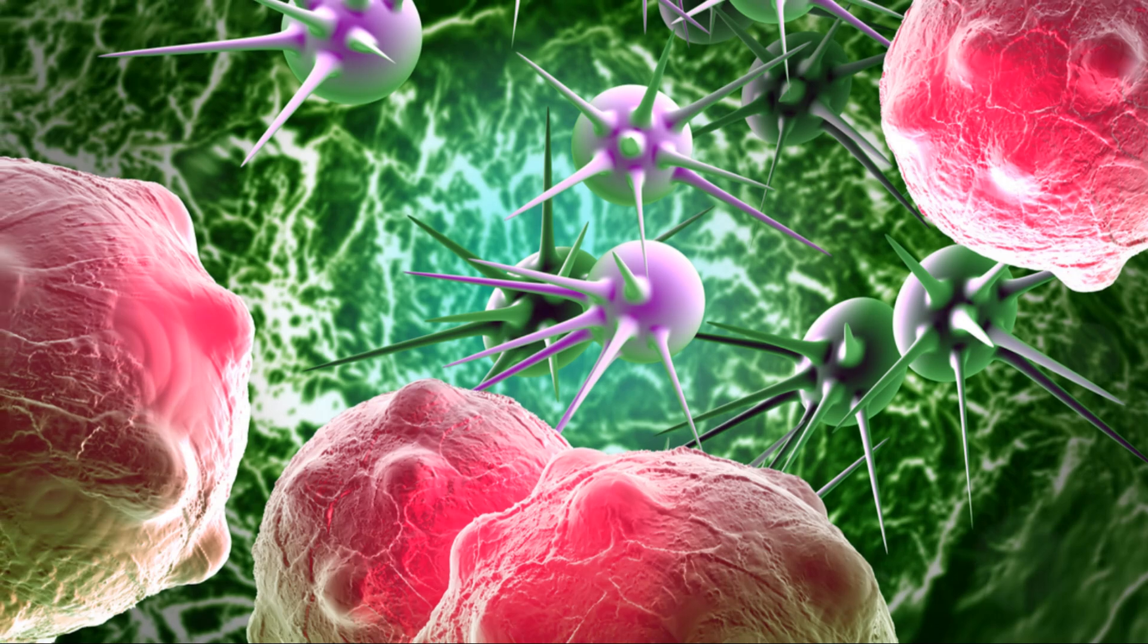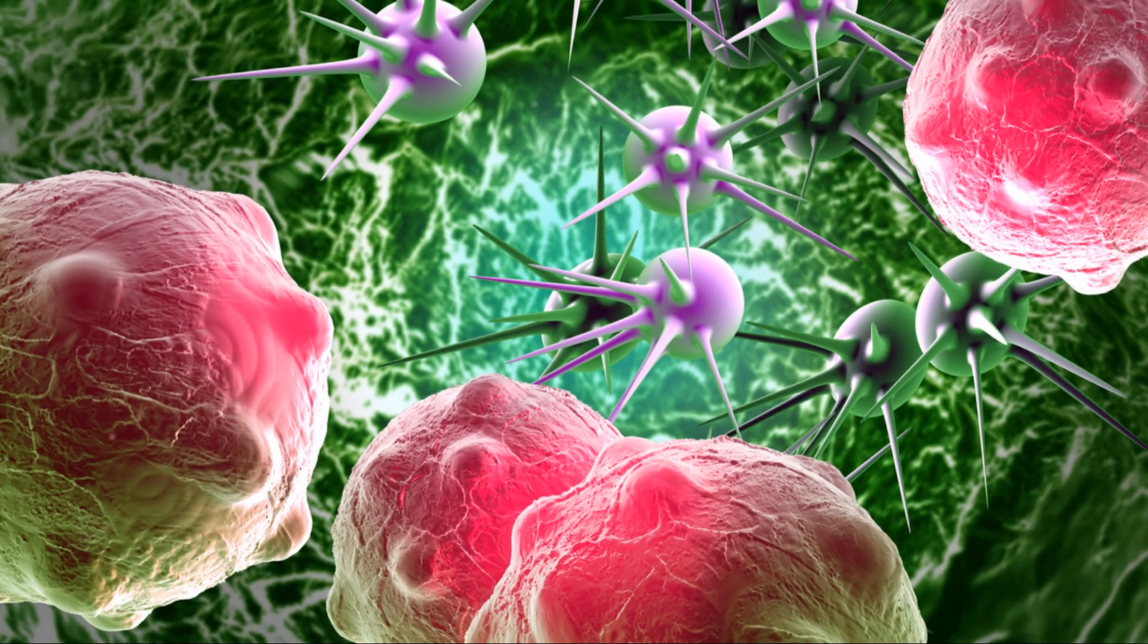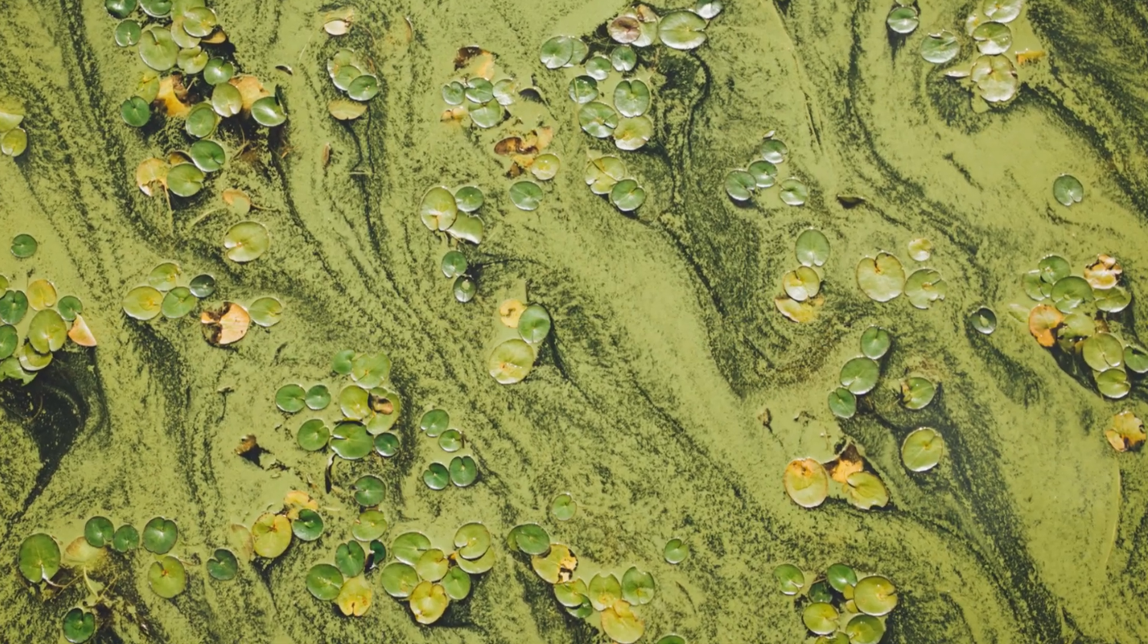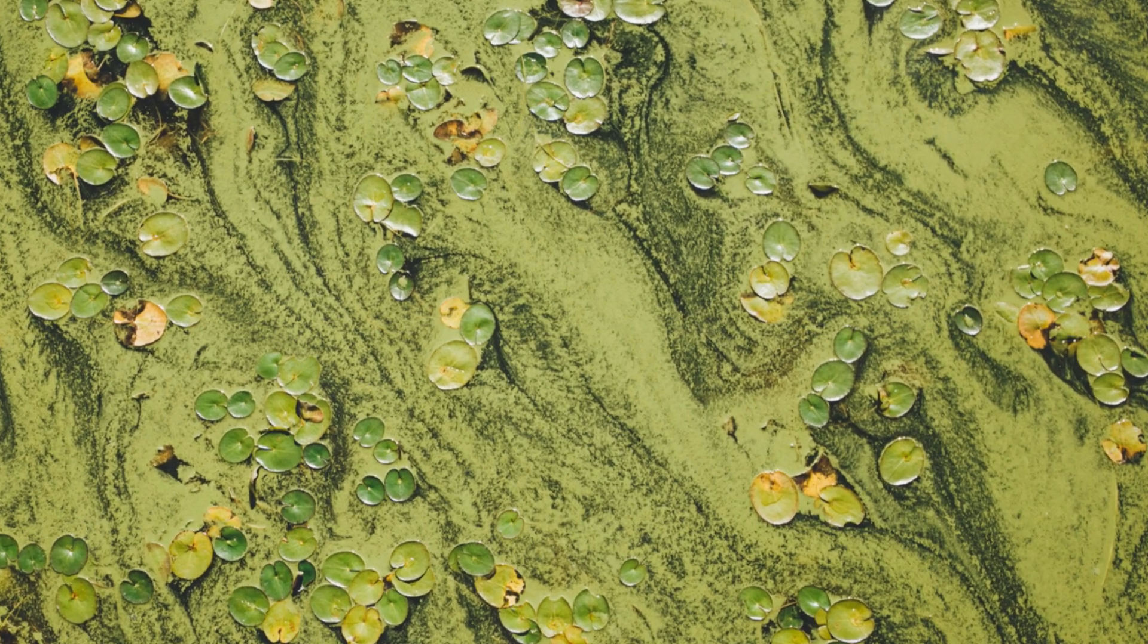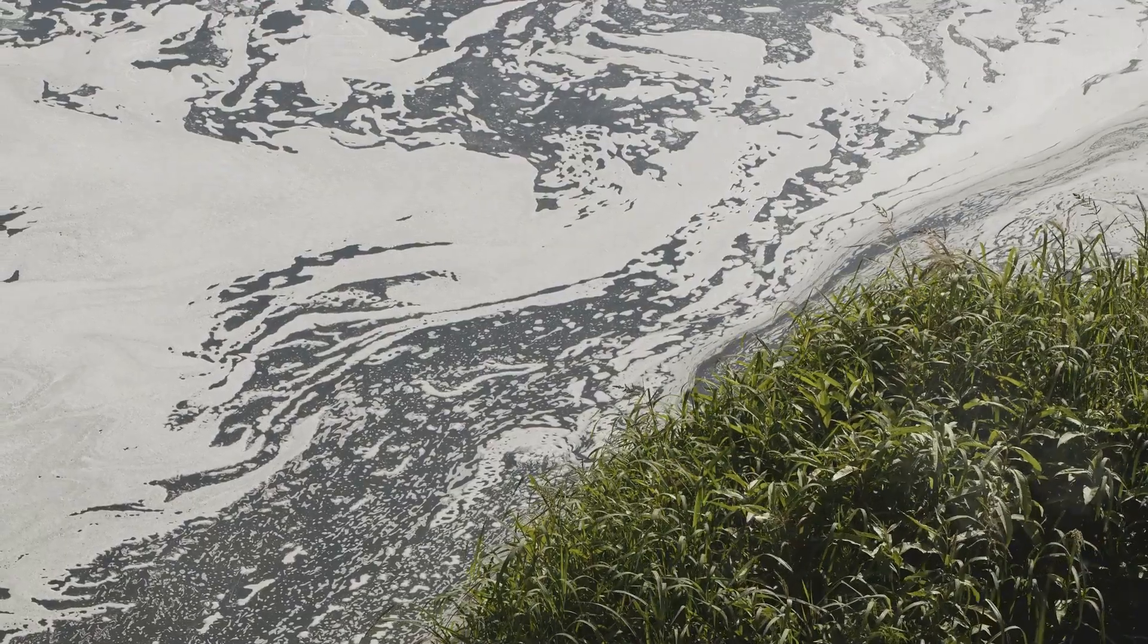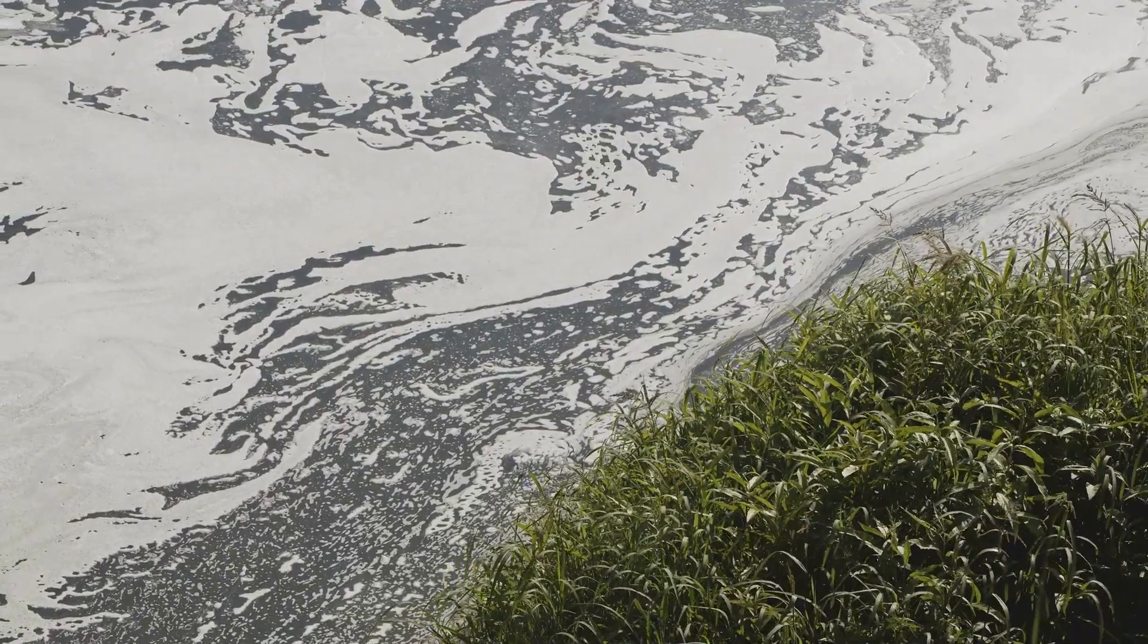Among the early prokaryotes, a new type of organism emerged, cyanobacteria, also known as blue-green algae. These remarkable organisms possessed a new ability: photosynthesis.